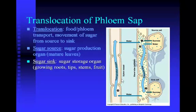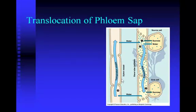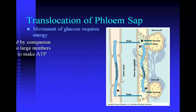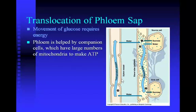The movement of glucose requires energy, so the phloem cells inside a plant are surrounded by companion cells. These companion cells are right next to the phloem cells and have large numbers of mitochondria that make lots of ATP, which they donate to the phloem. The phloem uses this extra ATP to help it move sugar throughout the plant.